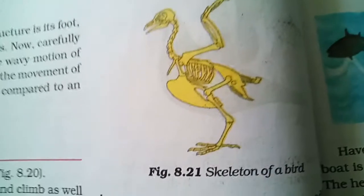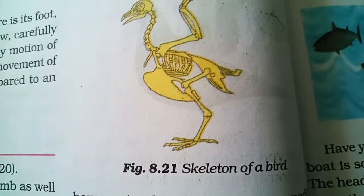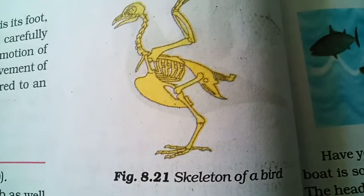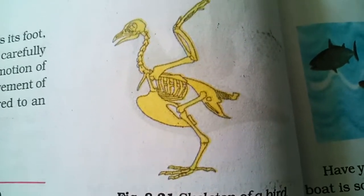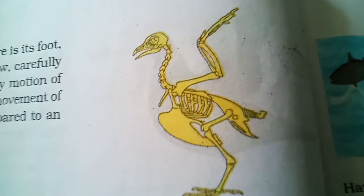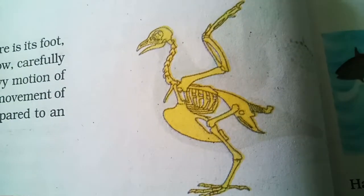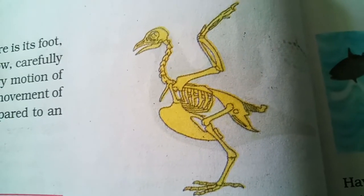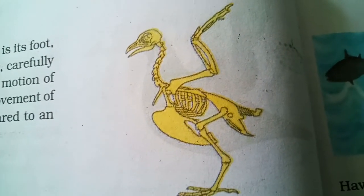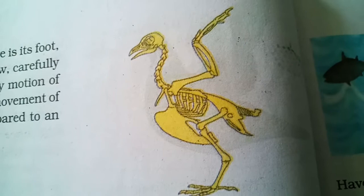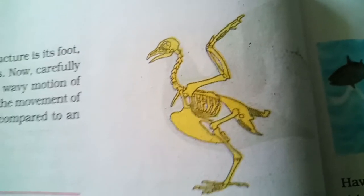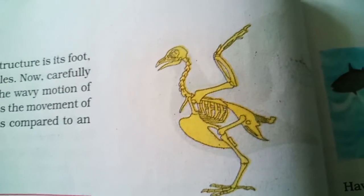Look here children at figure number 8.21 — there is the skeleton of a bird. Here you can see that the bird's bones are shown. The upper two limbs are shown, and the forelimbs are modified as wings.